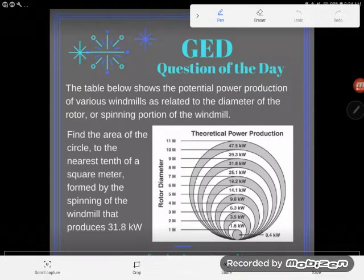It's GED question of the day time and it looks like I have a very typical GED style problem - a word problem combined with a diagram, lots going on, lots of information. Let's see if we can interpret this. The table below shows the potential power production of various windmills as related to the diameter of the rotor, or spinning portion of the windmill.